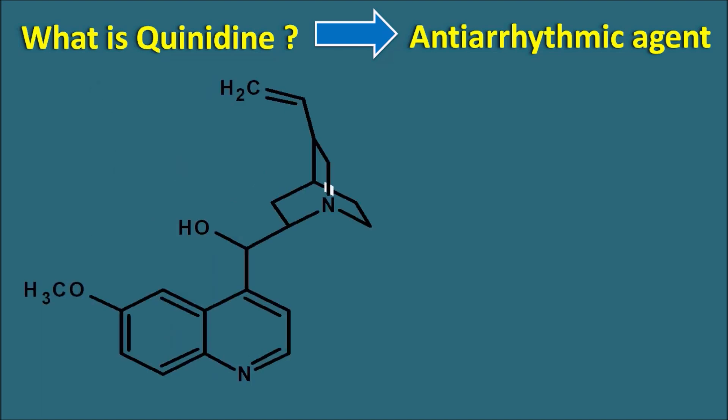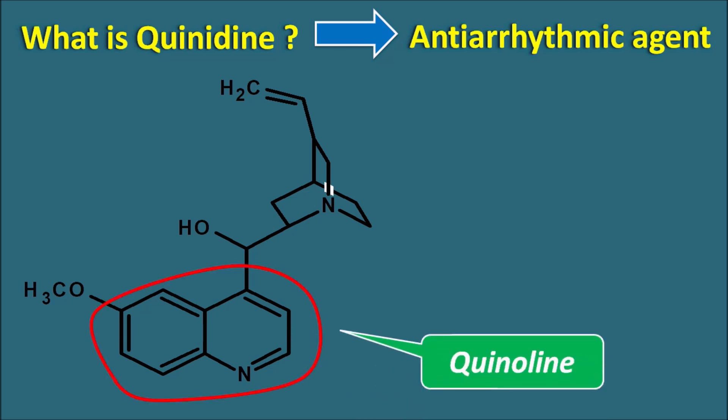This is the structure of quinidine. It contains a quinoline ring system attached to a quinuclidine ring system through a methanol bridge, so quinidine is chemically a quinoline methanol derivative. There is no structural relationship between loperamide and quinidine because loperamide is a 4-phenylpiperidine whereas quinidine is a quinoline methanol derivative.